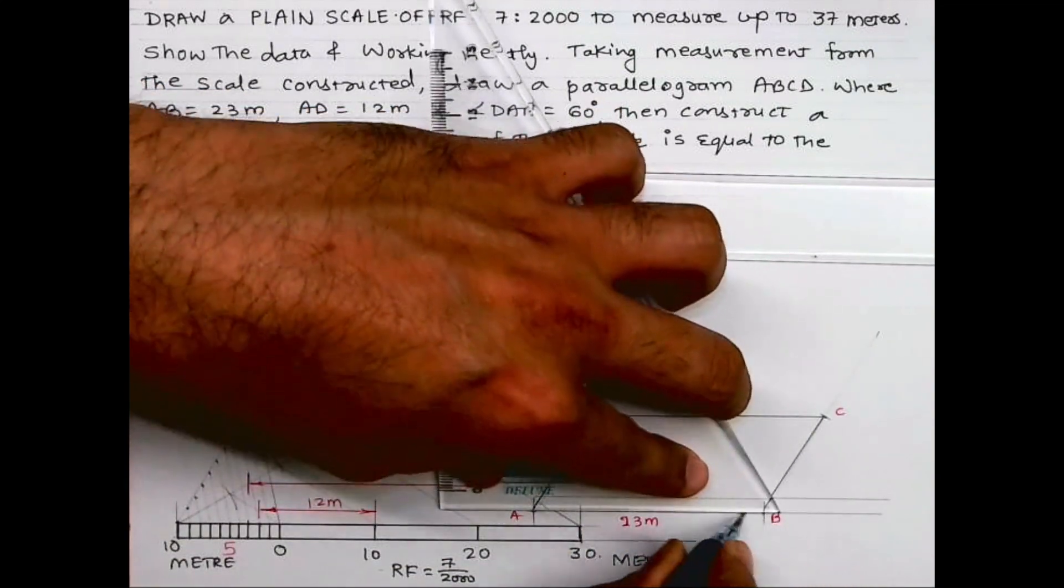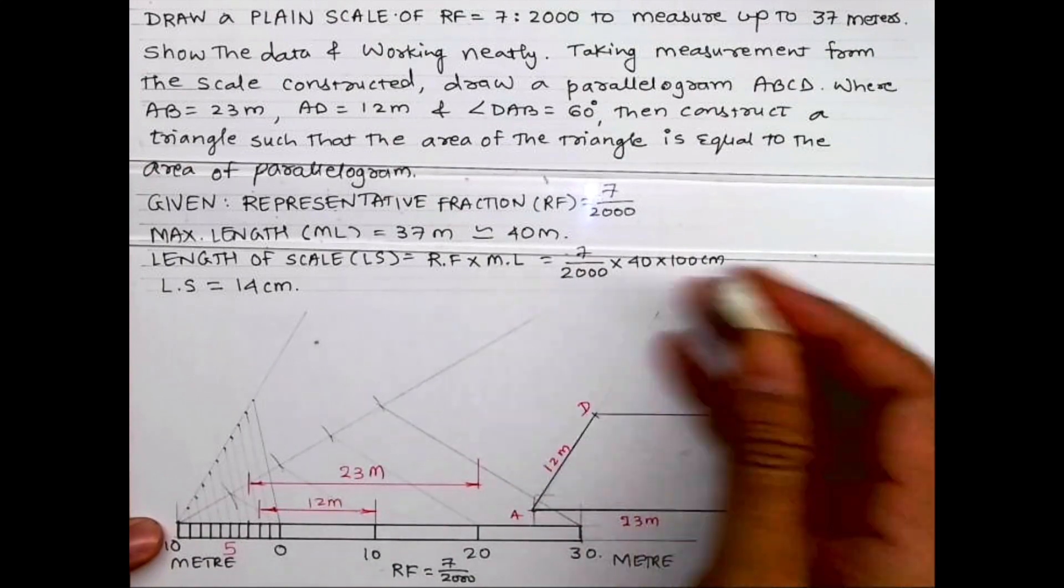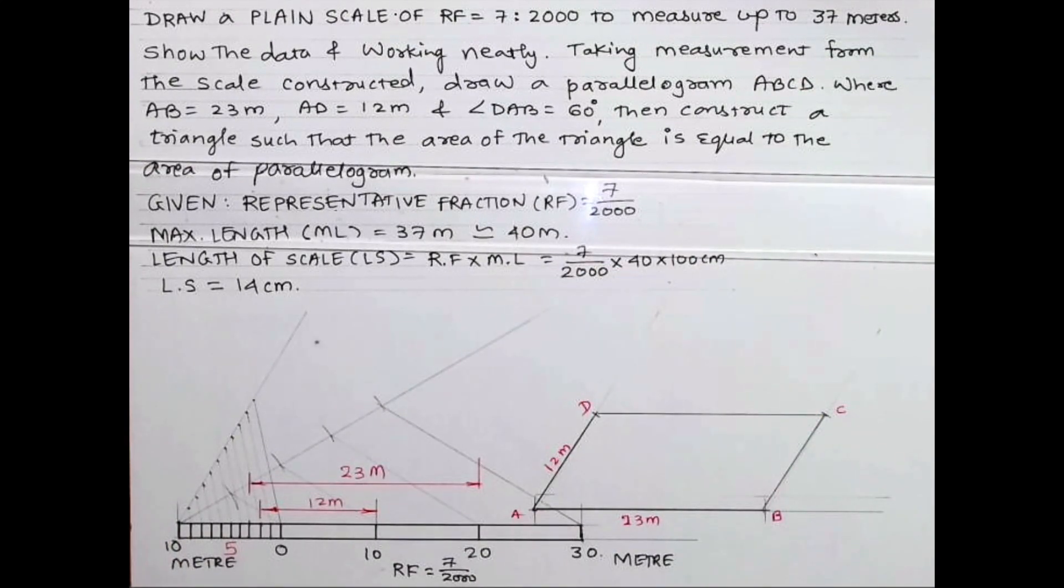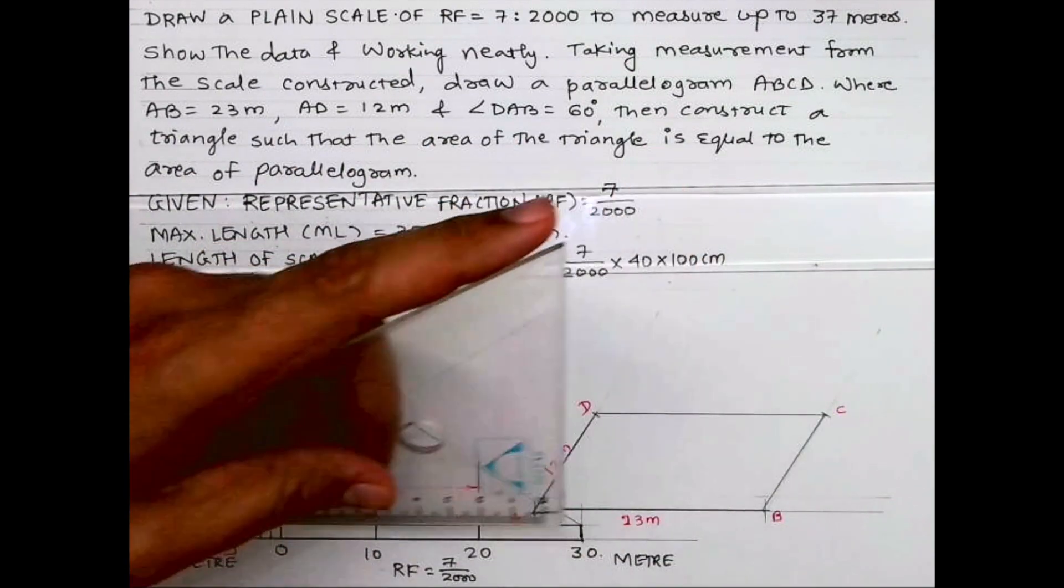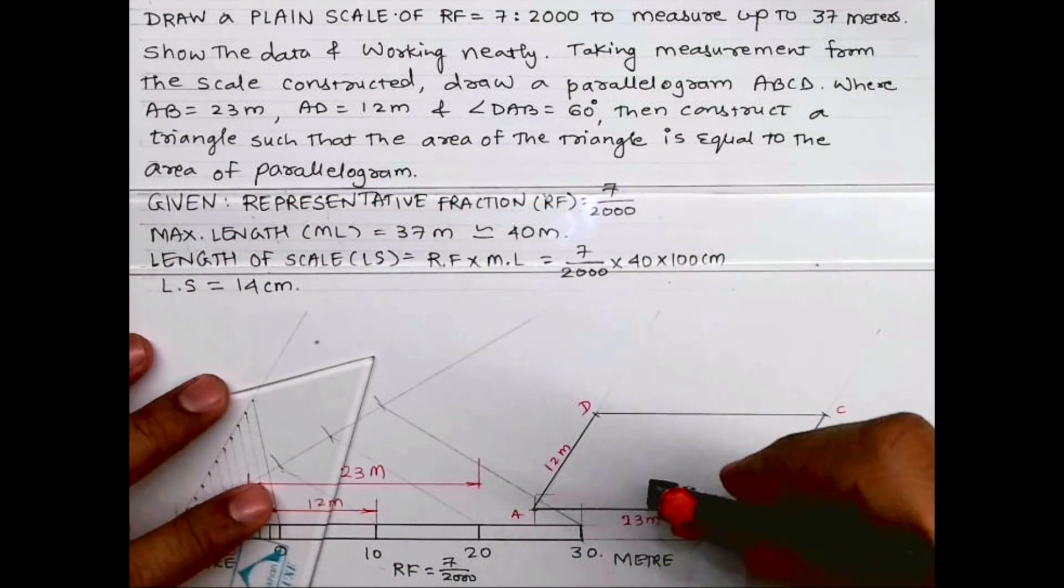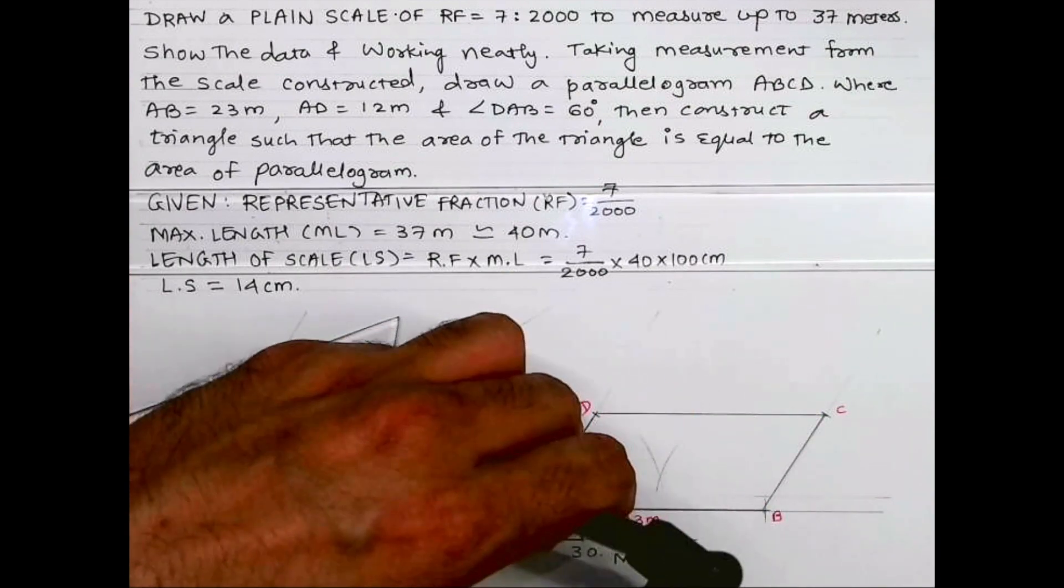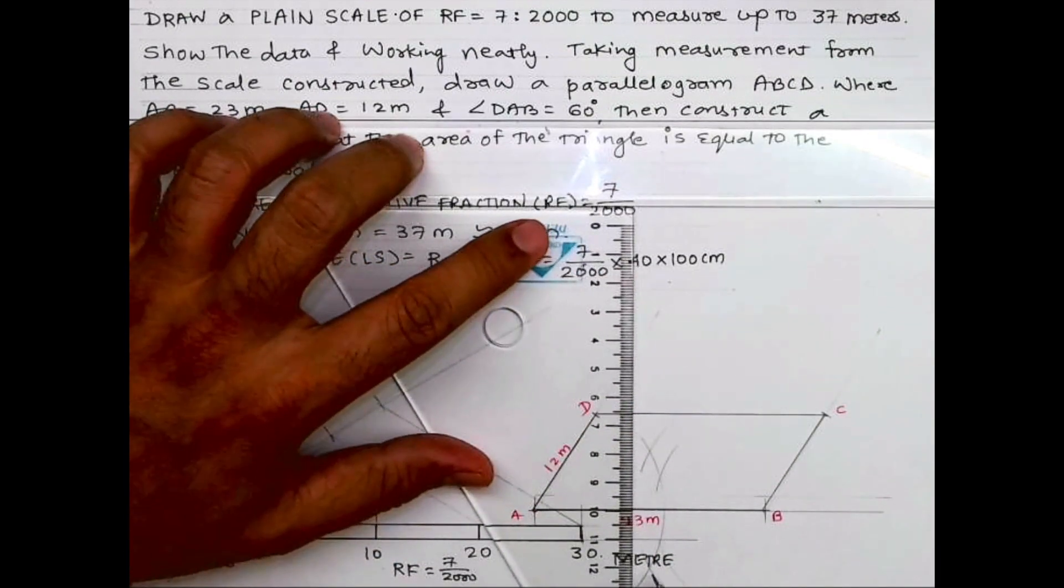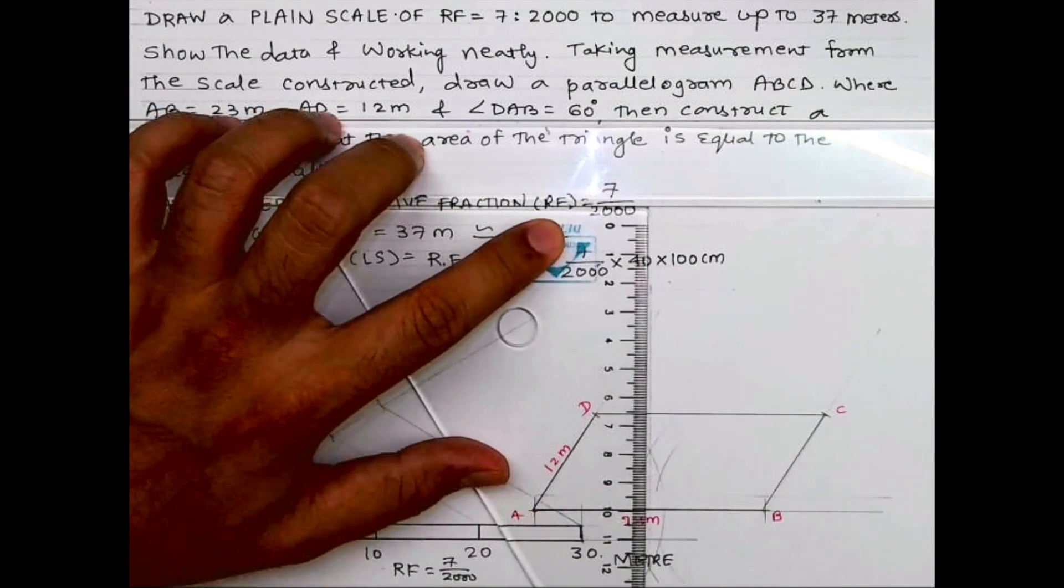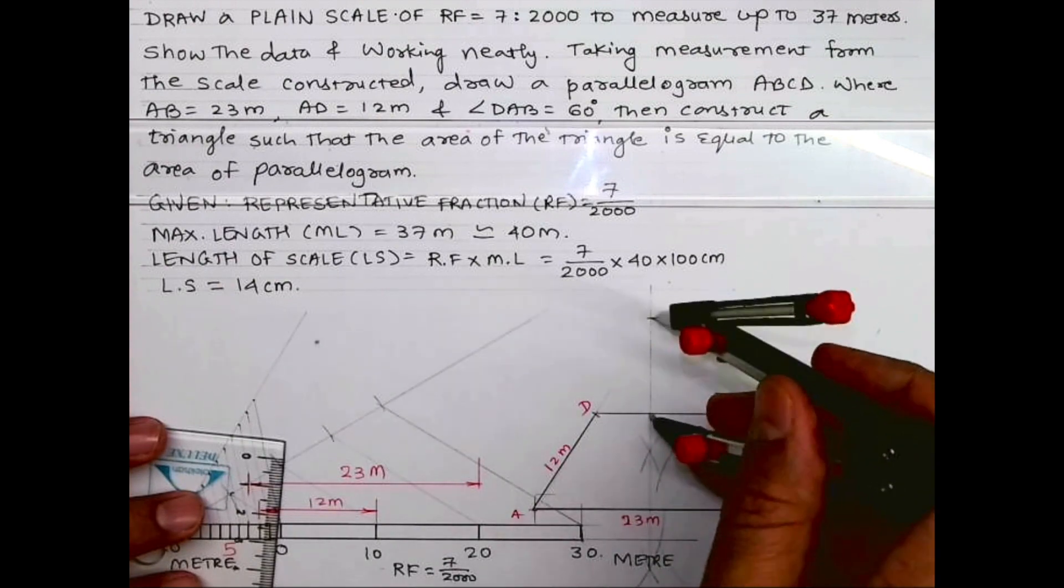All of you know how to convert rectangle into triangle - double the height. So here also it will be same logic. Now what we need to do, we need to divide this line AB into two parts. So after dividing line AB into two parts, you take double the height. Take this height and mark it up, so we will get point P.